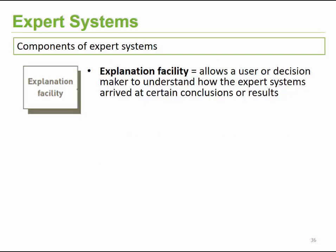The next component is the explanation facility. This component allows a user to understand how the system came to a certain conclusion or result. For example, once a bird species has been identified, the explanation facility will tell you the identifying factors that led it to conclude that particular species.